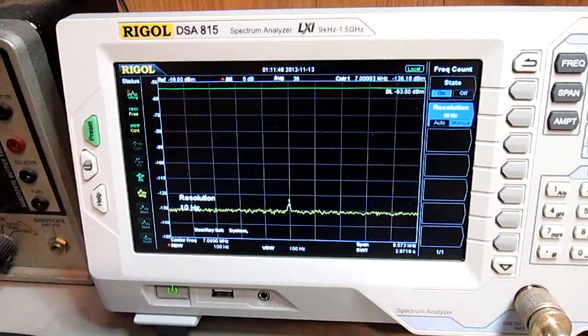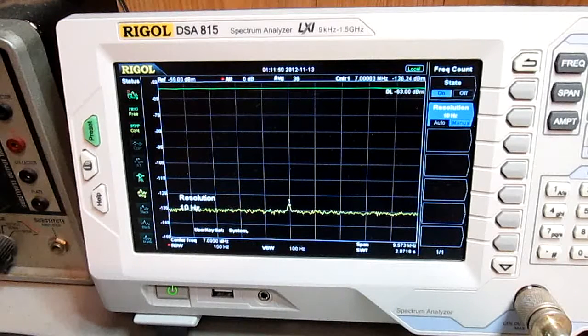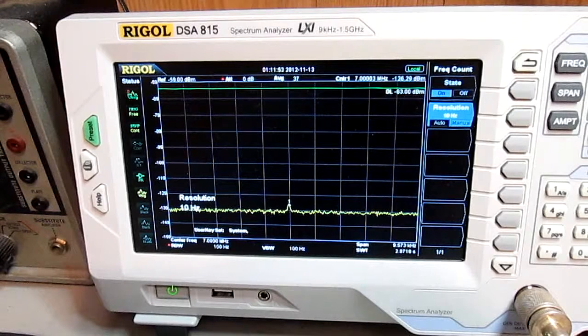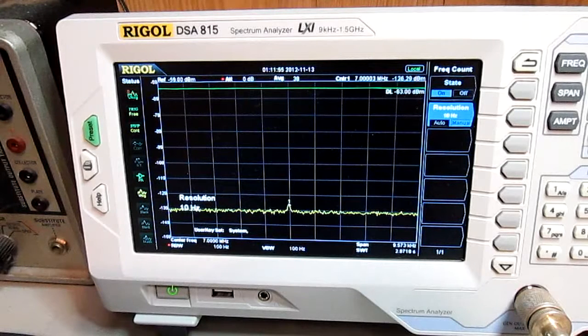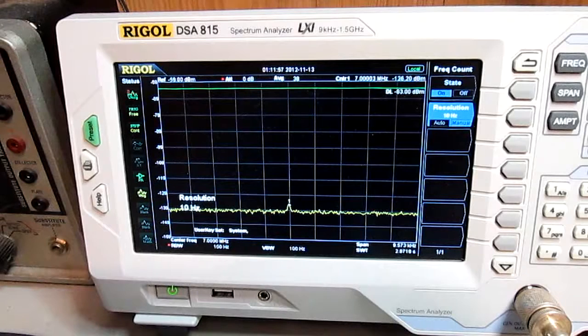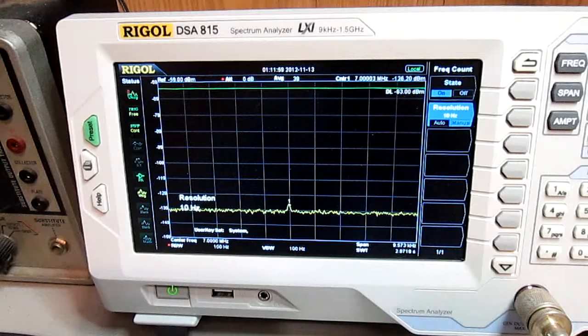And hopefully you can see the little blip down there at the bottom on the trace, the little hill as it were, with the number one marker on it, reading at 7.0003.